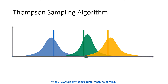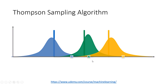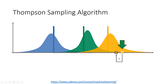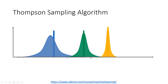Now we can iterate one more time. This distribution returns this value, this distribution returns this value, and this distribution returns this value. The biggest among these is this one, so we select that machine. We pull the lever, and the value we get from the machine is this one. As the real value is lower than what we thought, we shift our distribution to the left and make it narrower. By the law of large numbers, it is going to get closer and closer to the real expected value — not the real distribution, just the real expected value.